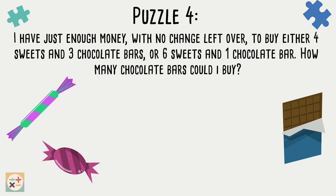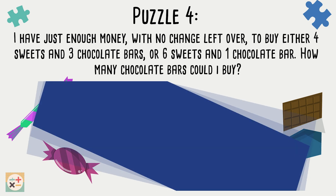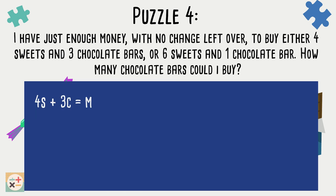For the final puzzle, we can use simultaneous equations to solve this. Let's create some equations from the information we are given in the puzzle. We can use the variable S to represent the amount of sweets, the variable C to represent the amount of chocolate bars, and the letter M for the amount of money we have.